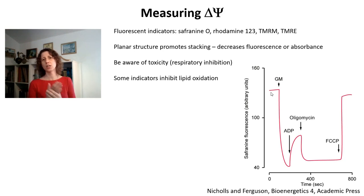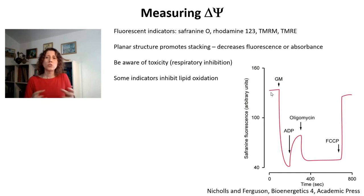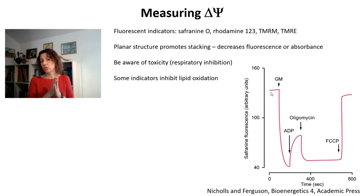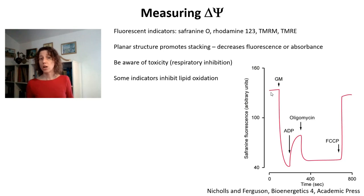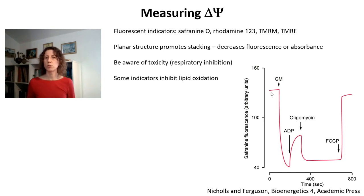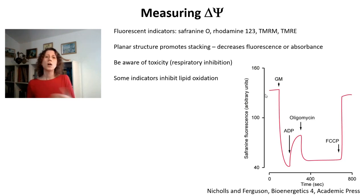Another thing: because these probes are membrane permeable and are cations, they tend to accumulate at the interface between the mitochondrial inner membrane and the matrix. They can act as quenchers and blockers of lipid oxidation processes that happen by chain reactions where one lipid oxidizes another. Sometimes these probes can block these reactions, so you may be measuring membrane potential while also inadvertently inhibiting lipid oxidation in your media because of the probe, without being aware of it.